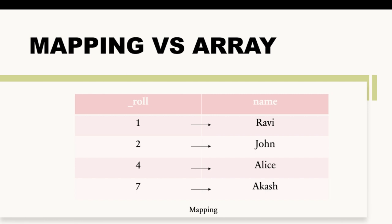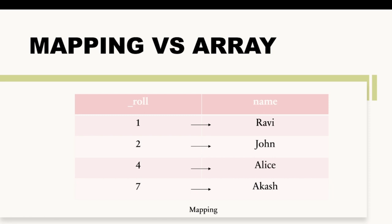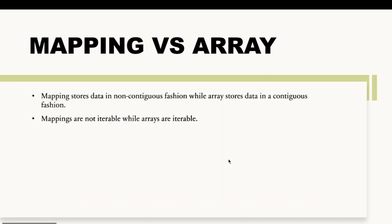That is how mappings are different from arrays. Which one to use depends on whether you want to store continuous or discontinuous data. If you want to store continuous data, arrays are the best choice. If you want to store discontinuous data, mappings are the best choice. Another difference is that mappings are not iterable — you cannot run loops on mappings — but arrays are iterable and you can run loops on them.